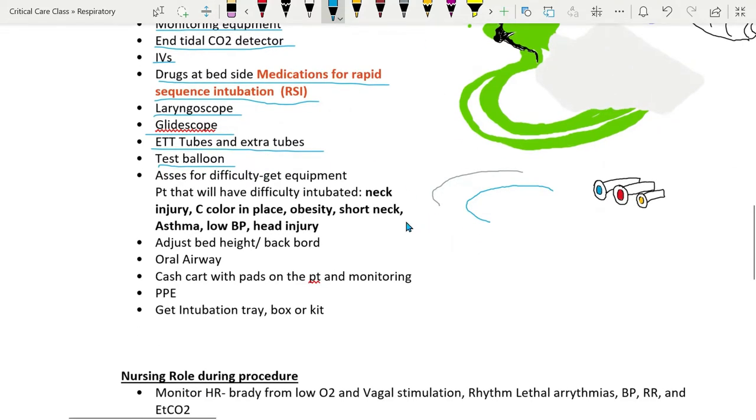Nurse has to also assess for difficulty of intubation such as neck injury, C-collar in place, obesity, short neck, asthma, low blood pressure, head injury. These conditions may require adjustments during intubation, for example, such as if there's a larger patient raising their head higher and supporting their back, which is called ramping. So the nurse also has to adjust the height of the bed and remove the backboard to allow easier access to the head of the patient.